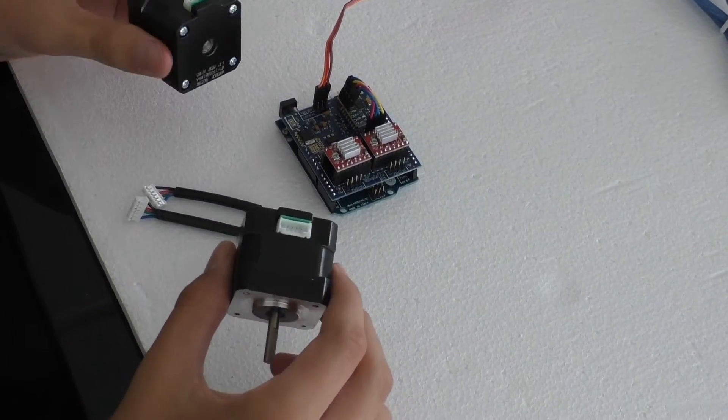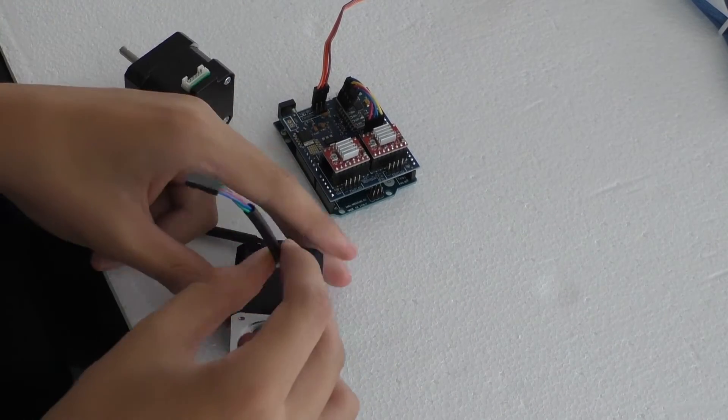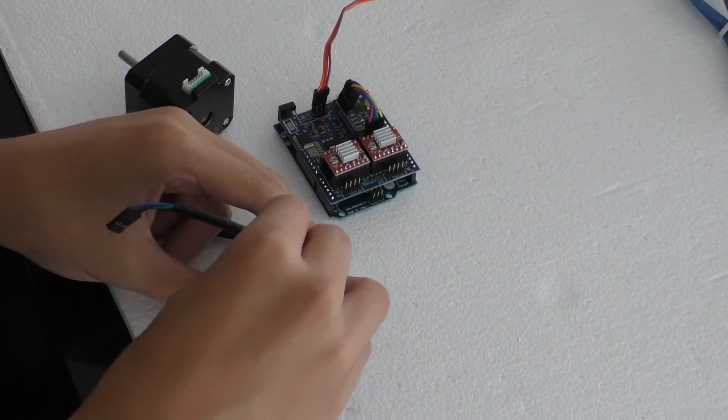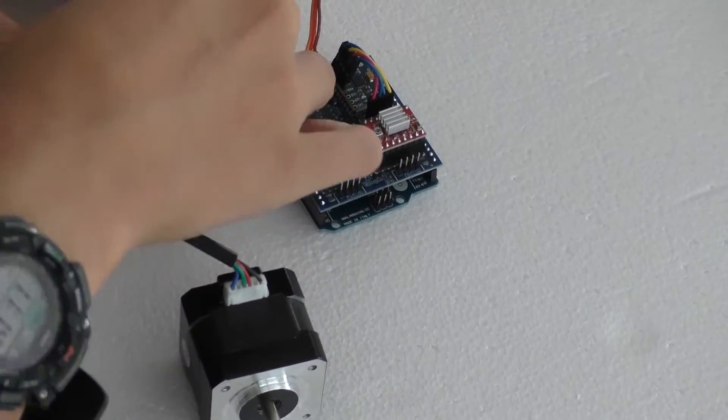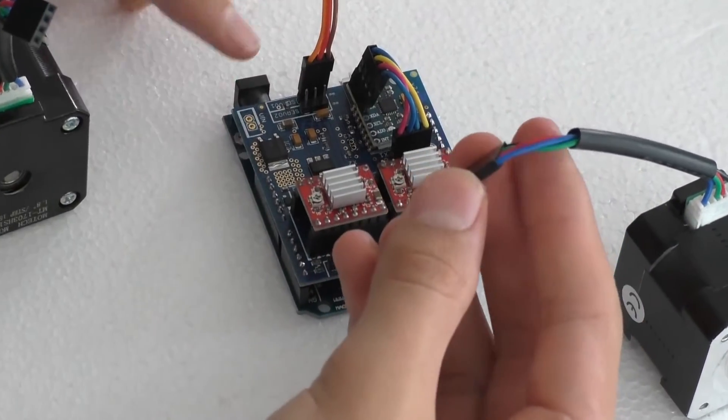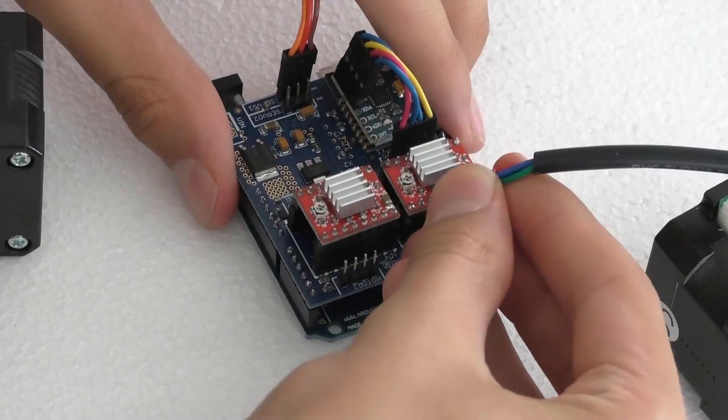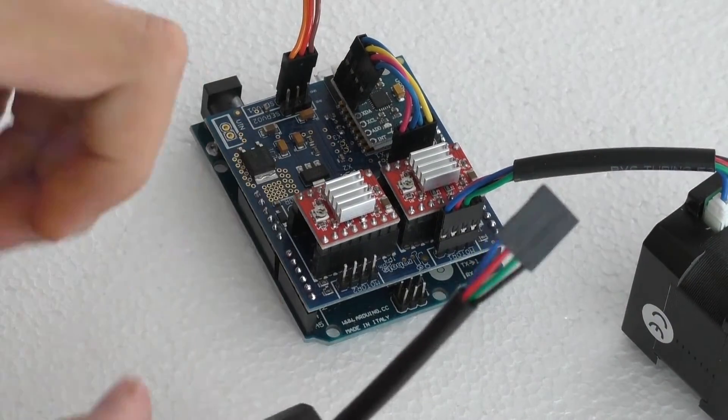Now, we're attaching the stepper motors for the wheels to the brain. Connecting the wires so that the slots fit in. Make sure that the blue wire is closest to the power. This goes for both motors.